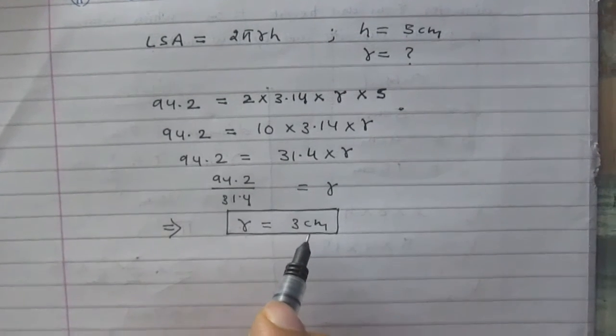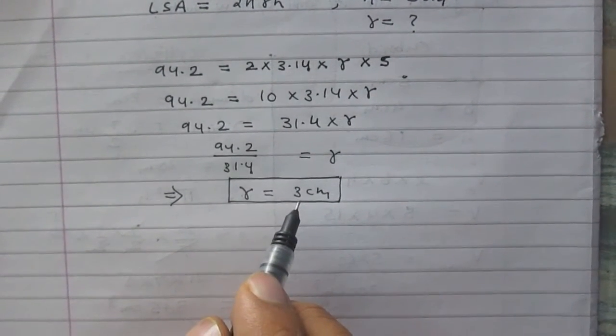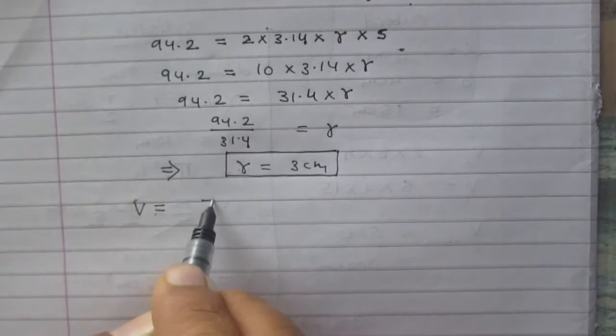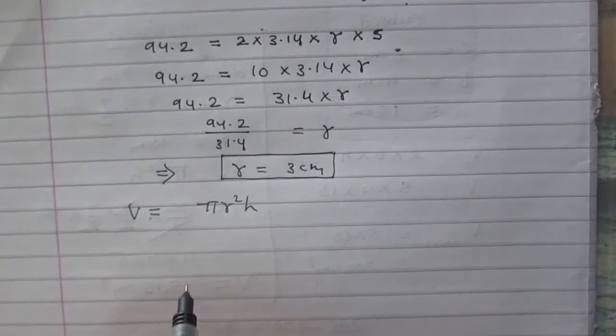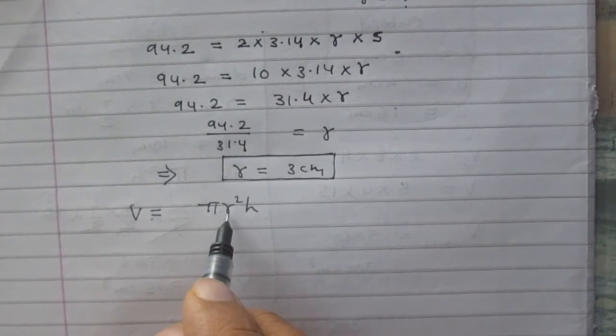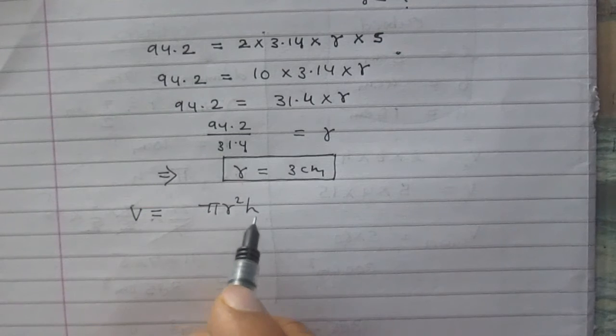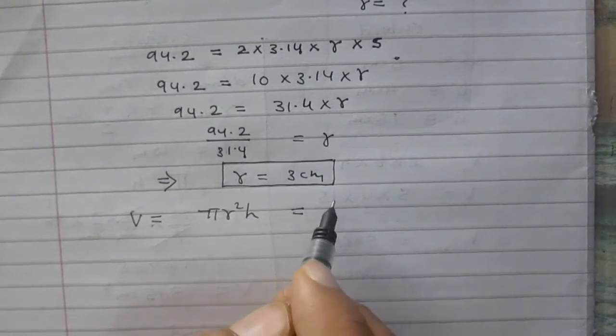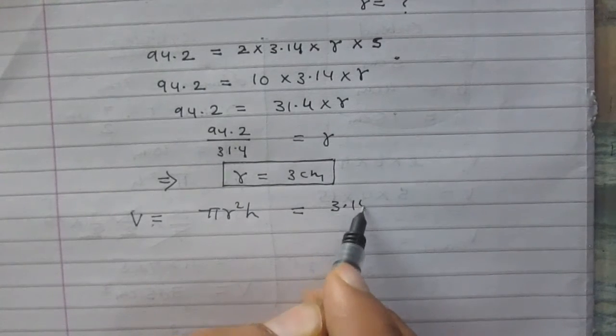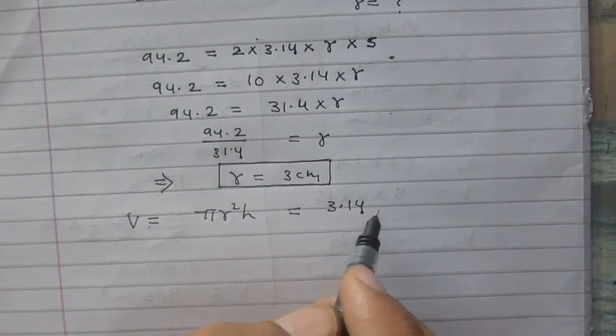Now we are to find its volume. Volume of a cylinder is πr²h by the formula, where r stands for the radius of the base of the cylinder and h is for height of the cylinder. Again we will consider pi as 3.14 according to the question.